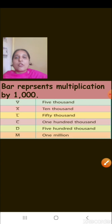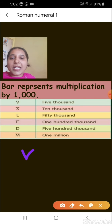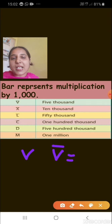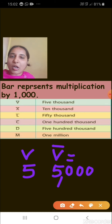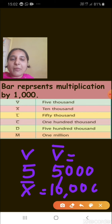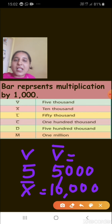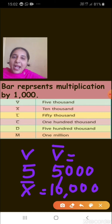To represent large numbers, if we put a bar just above a Roman numeral, it represents multiplication by 1000. So V-bar represents 5000, X-bar represents 10,000, L-bar represents 50,000, C-bar represents 100,000, D-bar represents 500,000, and M-bar represents 1,000,000.